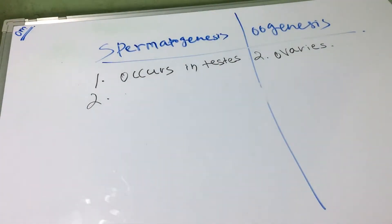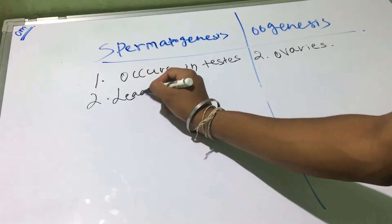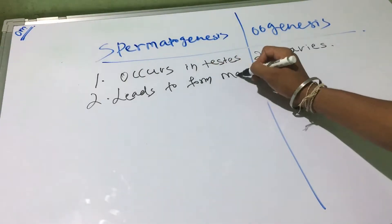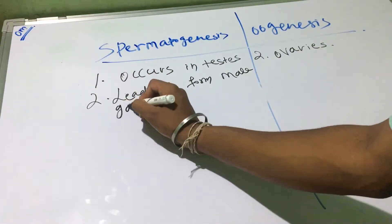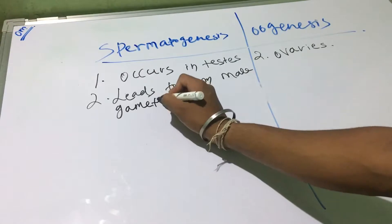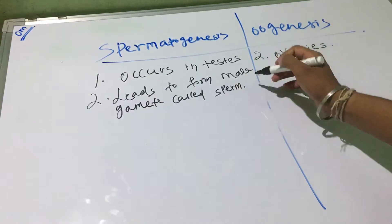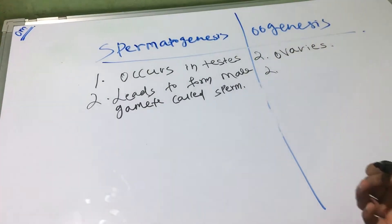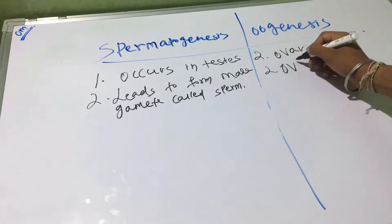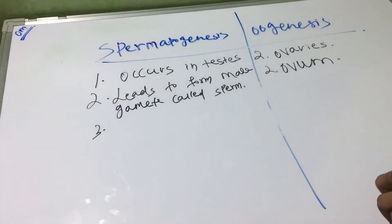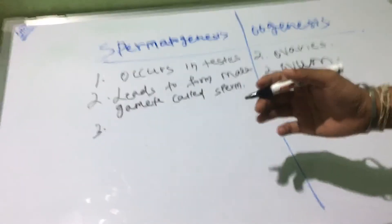The second point: spermatogenesis leads to form the male gamete called sperm, and in case of oogenesis, it leads to form the female gamete called ovum.